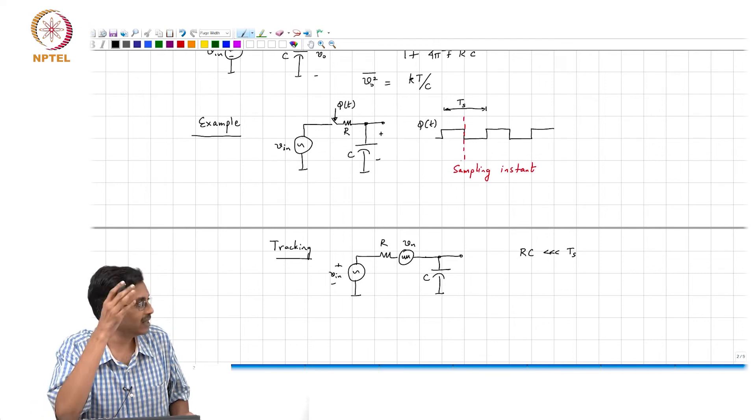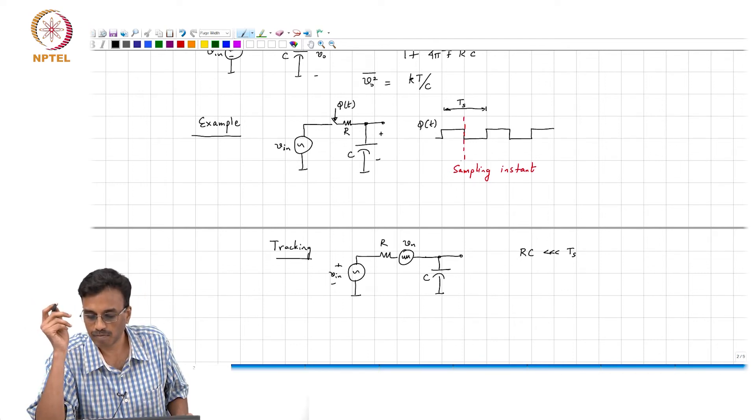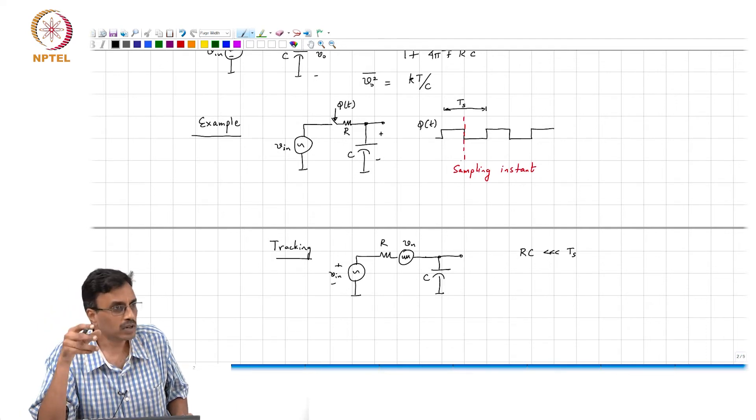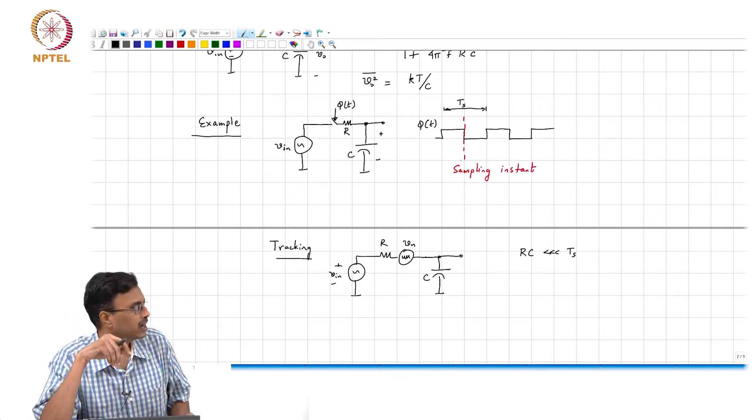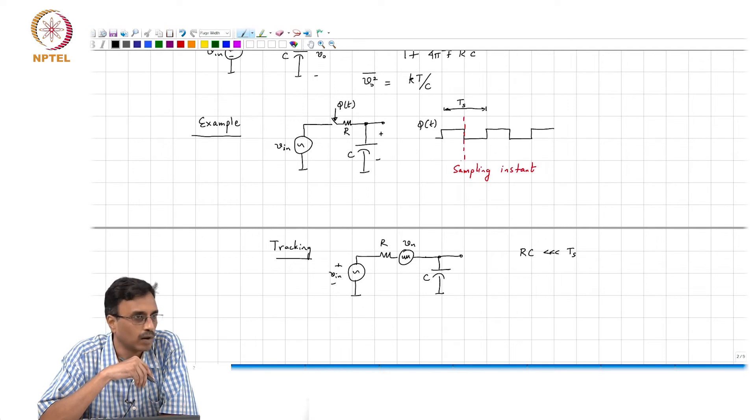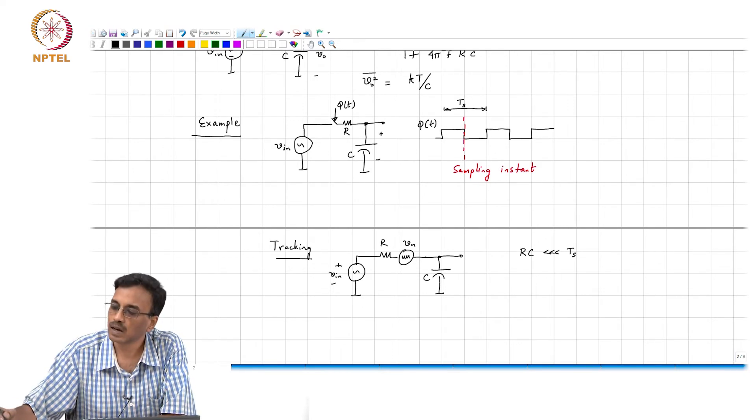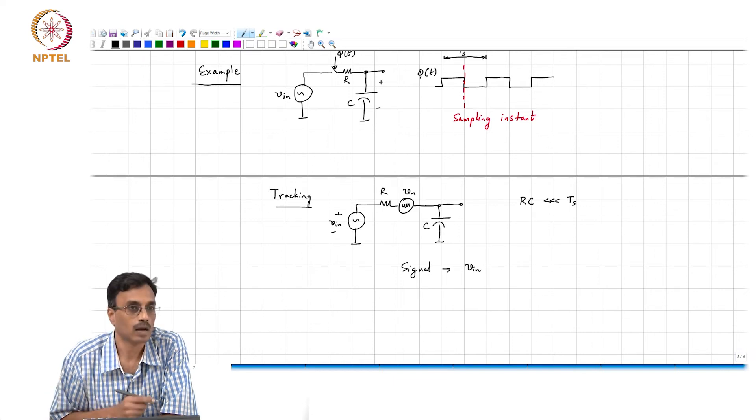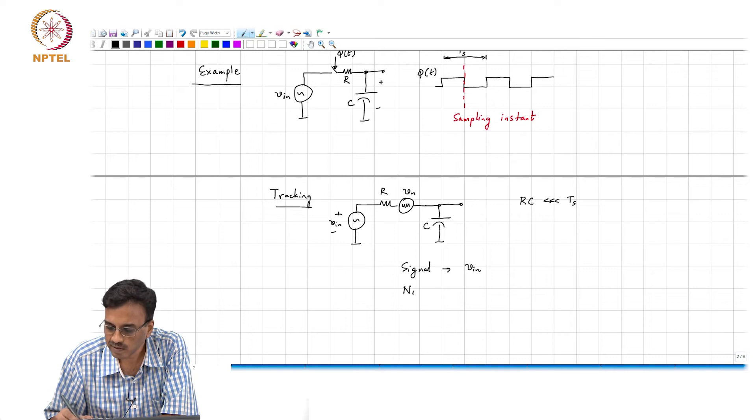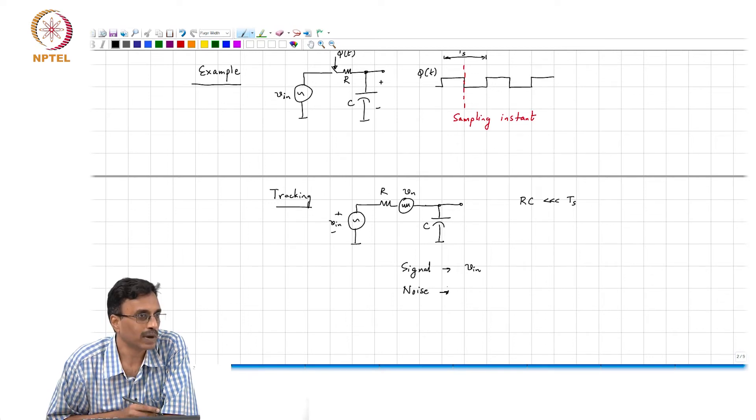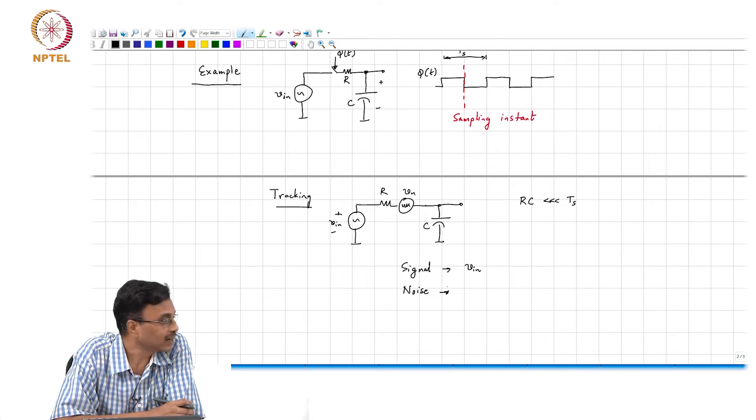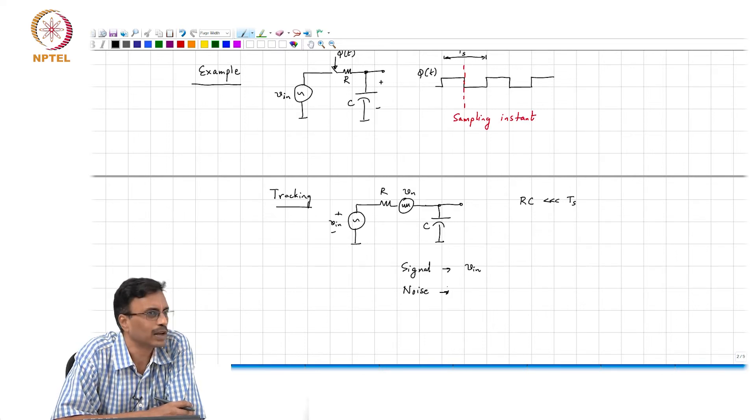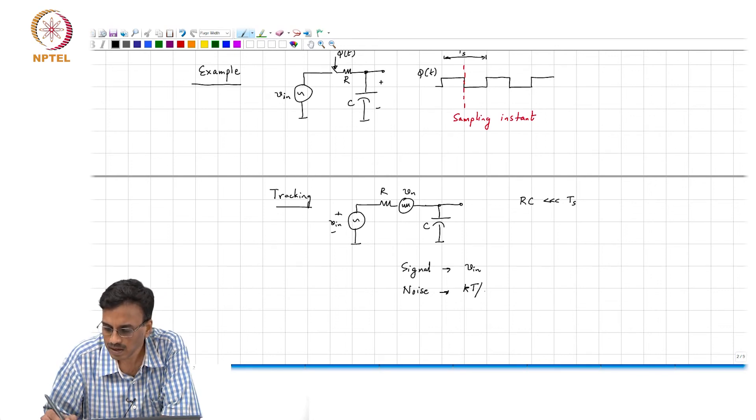During the tracking phase what comment can you make about the total voltage across C? It will of course consist of Vin. And remember at the sampling instant, namely the falling edge of this waveform phi of t, you not only have the input, you have a component due to the thermal noise of the switch. What comment can you make about the signal? The signal is basically Vin, whatever it is. What about the noise? It is zero mean, that is correct. It is a random waveform, that is correct. It has zero mean and it has some mean square value, and what is the mean square value? kT by C.